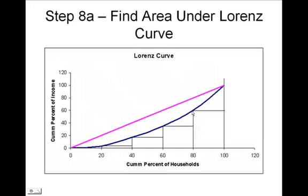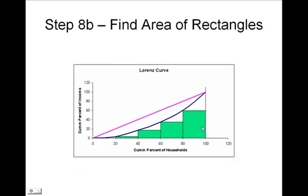The next step is to find the area under the Lorentz curve. I divide the area under the blue line, or the Lorentz curve, into rectangles. Here I have four unequal rectangles. Next, I find the area of each rectangle by taking the base, which is always 0.2 or 20 percent, times the height.